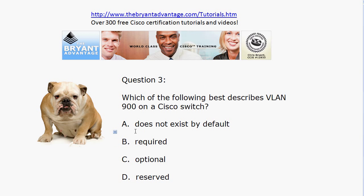So VLAN 900 does not exist by default — it's strictly optional. You don't need it for anything and it's not reserved for anything. The reason I mentioned that particular VLAN is to show you that you don't just have one reserved VLAN on a Cisco switch; you've actually got five.